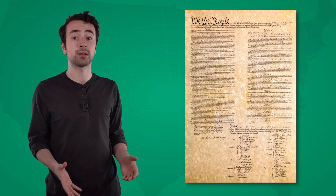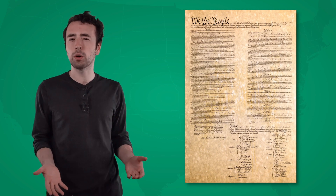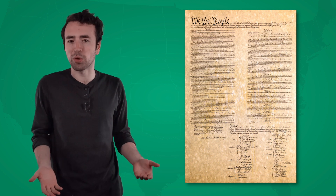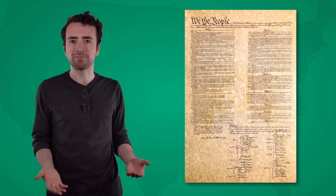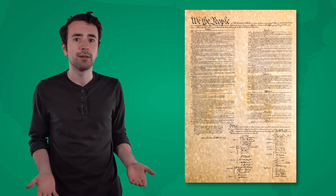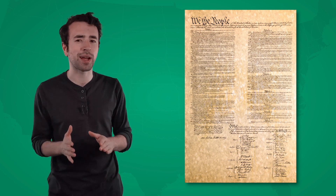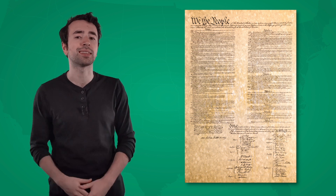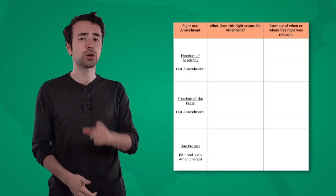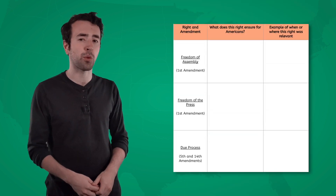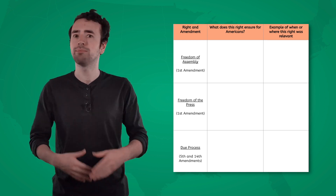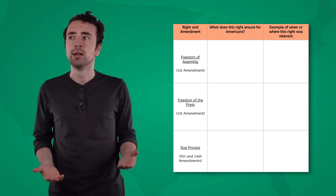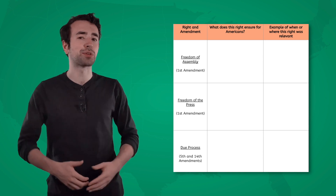Americans derive many of their rights from those outlined in the Bill of Rights and throughout the rest of the Constitution. What are some of the most important ones? Well, that depends on who you ask. Today we'll focus on a few different rights that have had wide-reaching impacts on the lives of American citizens throughout history. Make sure to follow along in your Rights Graphic Organizer. Let's start with the First Amendment, which lists quite a few important rights.